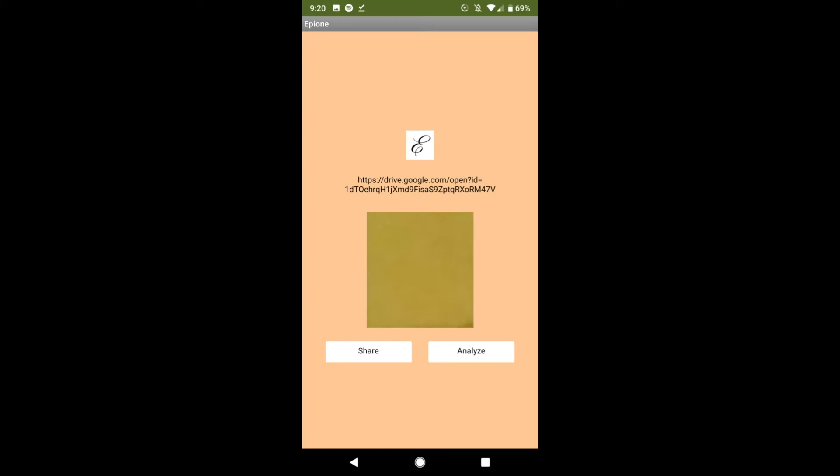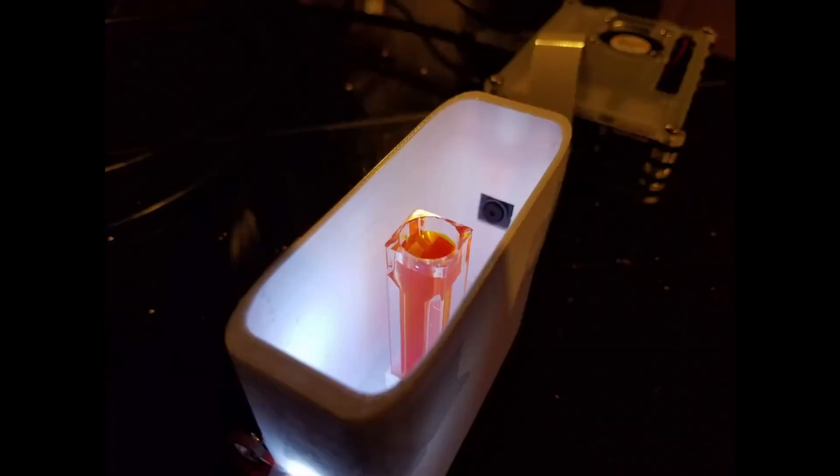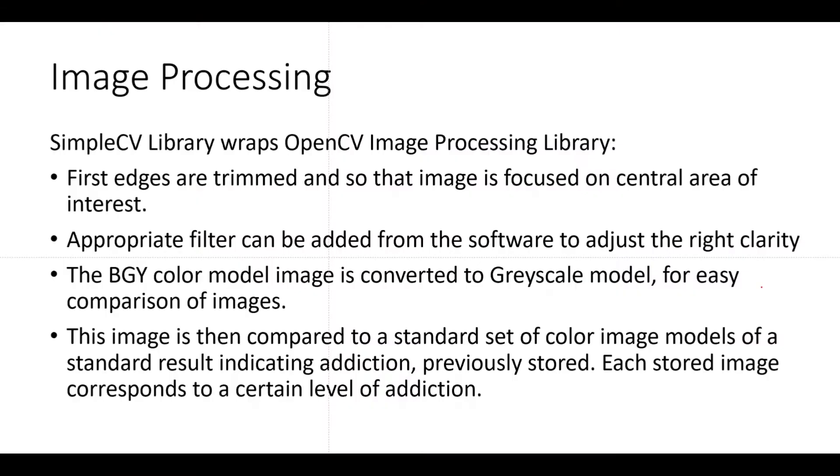It gives the option to either share the image with remote technicians or analyze the image to receive results. When analyzed results is chosen, in the back end, the Raspberry Pi compares the sample image to the base image of a normal protein produced by the mu opioid receptor.